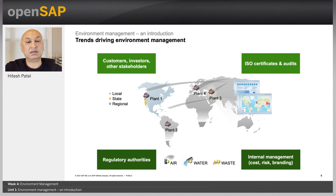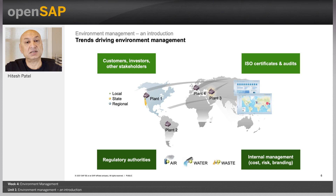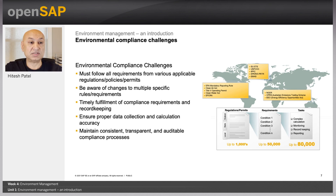On top of regulations, there are internal and external stakeholders that request environmental performance data. For example, investors may request a company to report their environmental performance in sustainability reports. Your business partners may ask that you get an ISO 14001 certification — an environmental management systems certification from the international body ISO. Additionally, internal departments may pressure the company to ensure that the risk of non-compliance is managed and the brand image is preserved. This poses a lot of challenges to an organization.